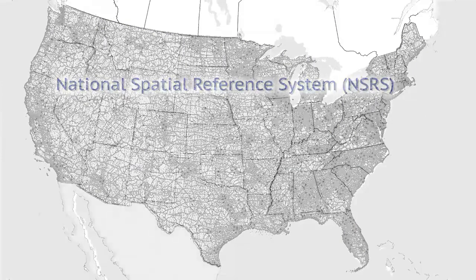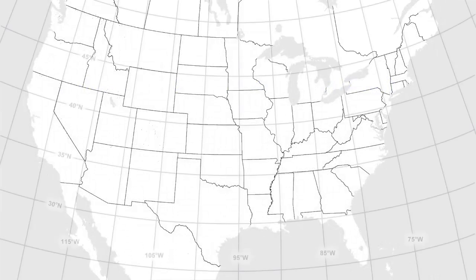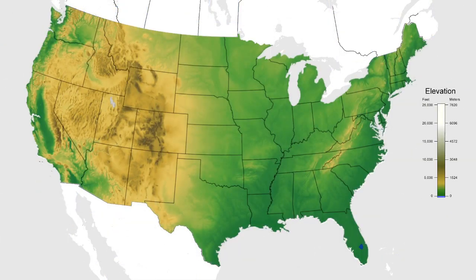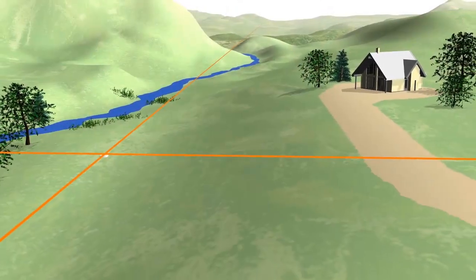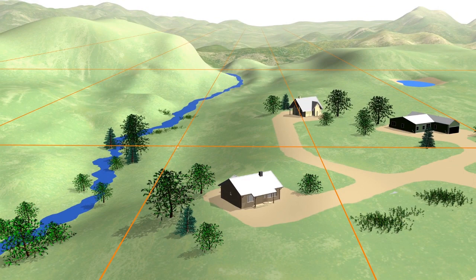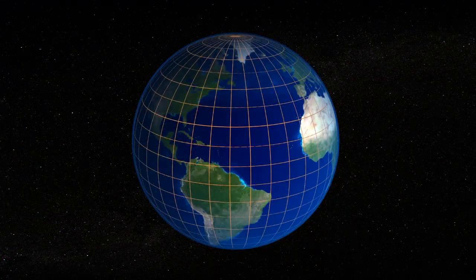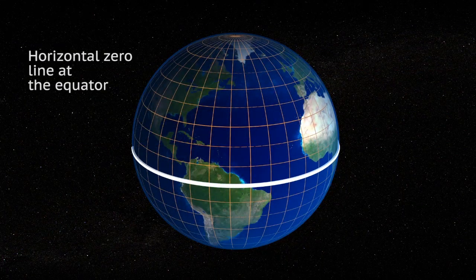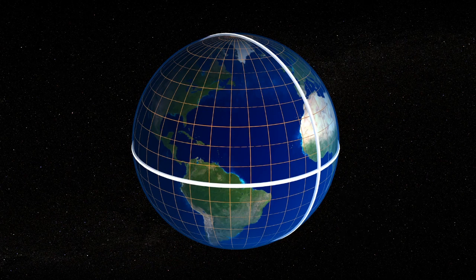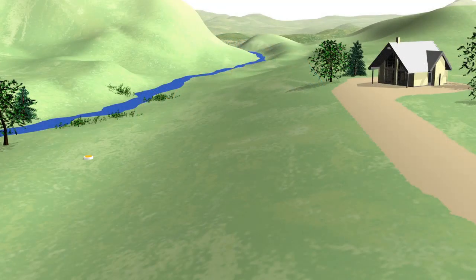For many decades, we have had two types of nationwide datums in the United States: horizontal and vertical, and they were generally separate from one another. Horizontal datums allow us to measure distances and directions across the surface of the Earth. Most horizontal datums define a zero line at the equator from which we measure north and south. There is also a zero line at the Greenwich Meridian from which we measure east and west. Together, these lines provide a reference for latitude and longitude.